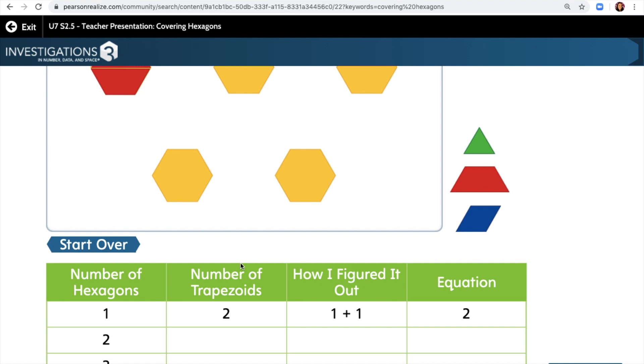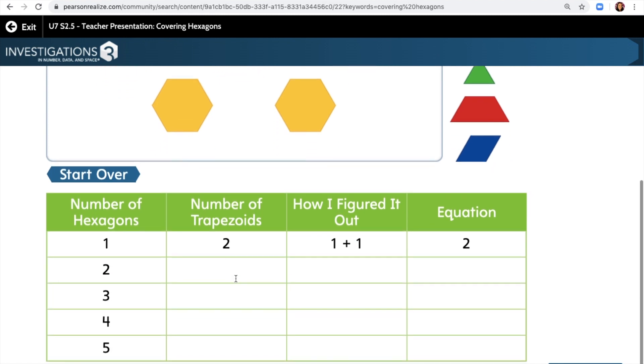So how many trapezoids will I need for two hexagons? Well, I know that I'm going to need four trapezoids because two plus two equals four. And my equation will be two plus two equals four.